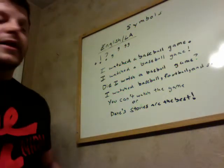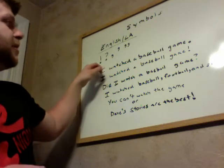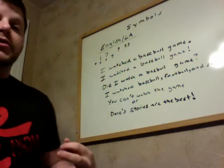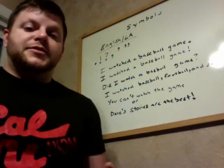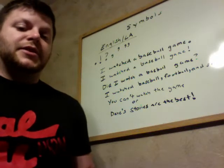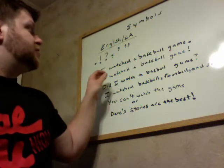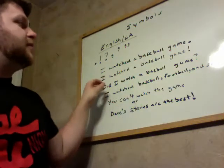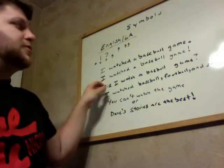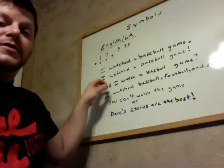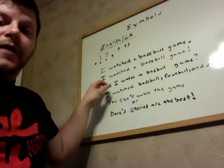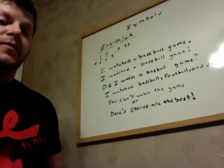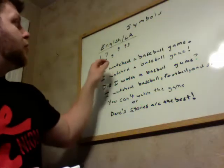Next we'll look at the exclamation mark. The exclamation mark, or exclamation point, is used to typically show excitement or emphasis on a particular sentence. If we use the same sentence — 'I watched a baseball game' — and put an exclamation point on it, we'd read it like this: 'I watched a baseball game!' Now we've shown excitement and emphasis, that's why we've used the exclamation point.